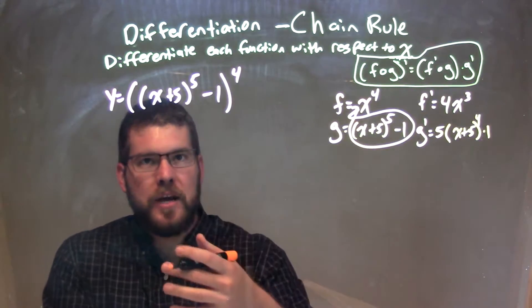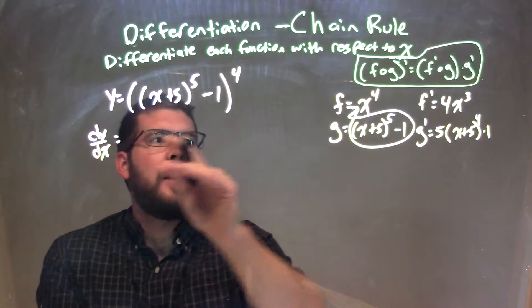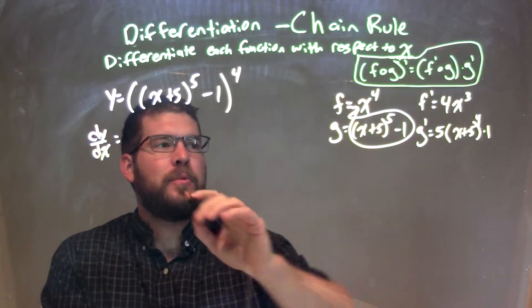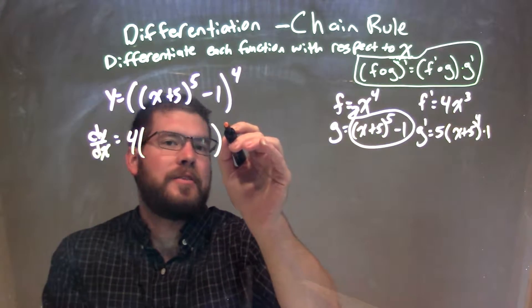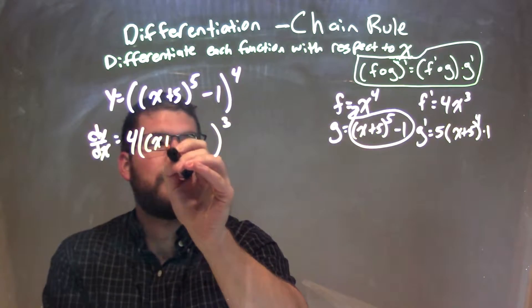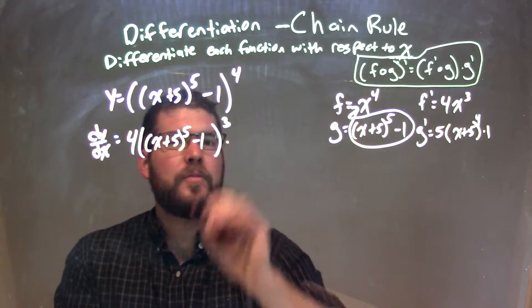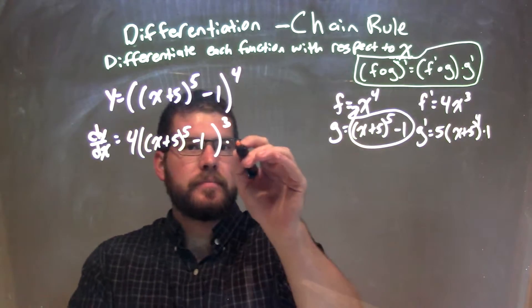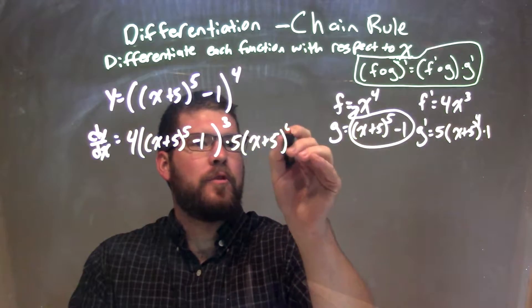So now when I apply the chain rule, we take my derivative dy dx. I have to find f prime of g. Well, f prime is 4 parentheses to the 3rd power. And we put g in there, which is x plus 5 to the 5th minus 1. And then we're going to multiply that by g prime, 5 x plus 5 to the 4th power.